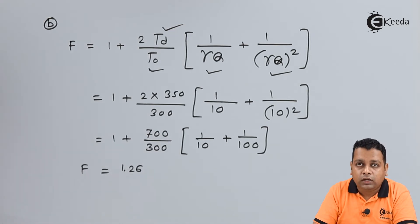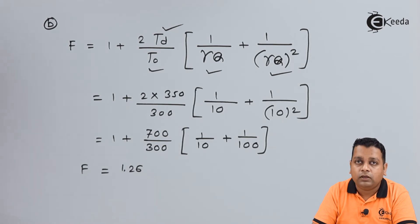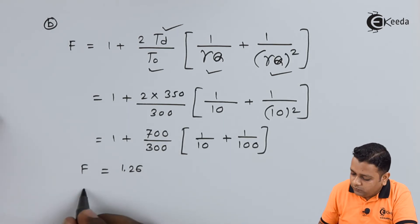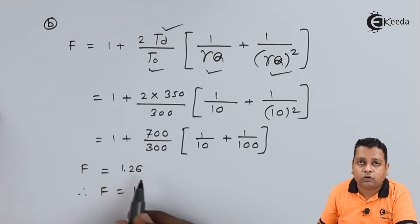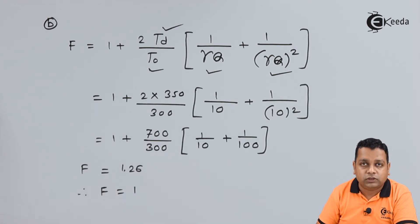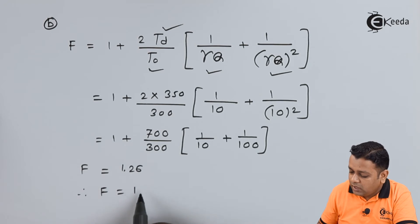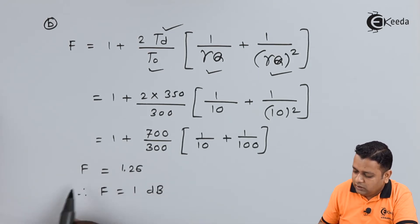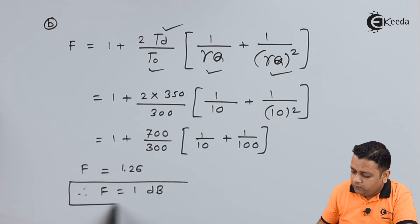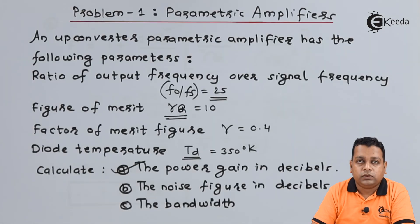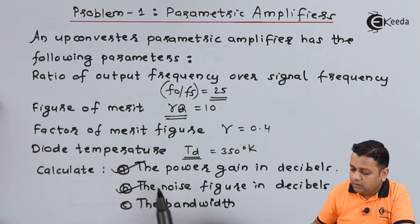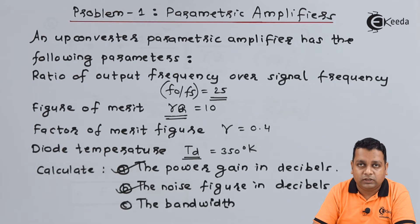Taking 10 log base 10 of 1.26, we express the value of F in decibels. The obtained value rounds to approximately 1.00, so we keep it as 1 decibel. This completes the answer for part B — the noise figure is 1 decibel.